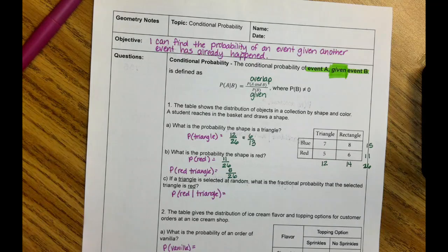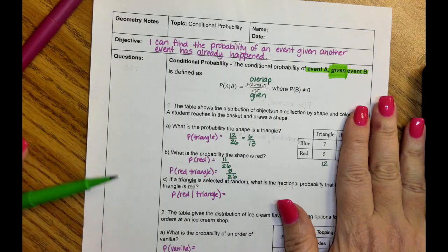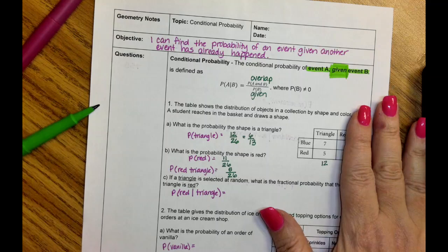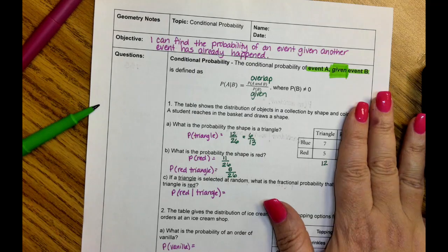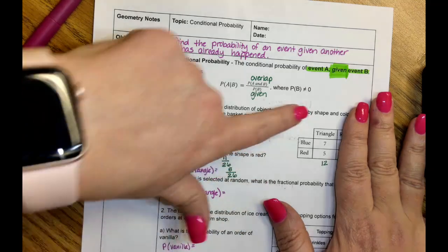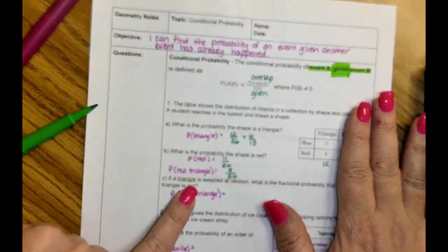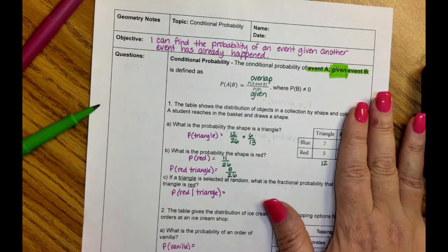Now here's where it changes into something different. If a triangle is selected — meaning I have already drawn a triangle — I don't even care about the rectangles anymore. I have already drawn a triangle. What is the fractional probability that the selected triangle is red? So you're looking for a red triangle — it has to fit both. We want it to be red and a triangle. So we're just looking at triangles because I restricted it. I already pulled out all the rectangles. All I have is red and blue triangles in the bag.